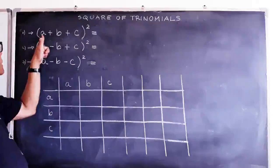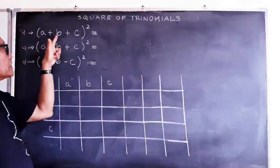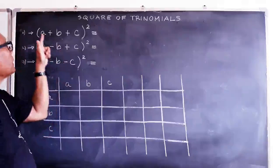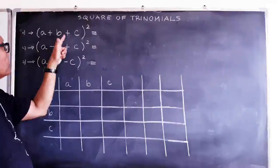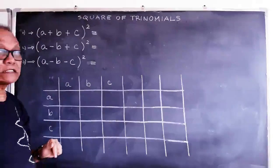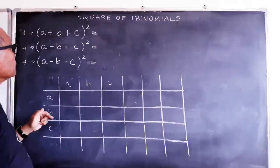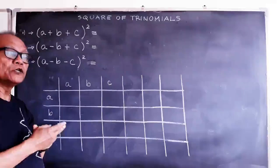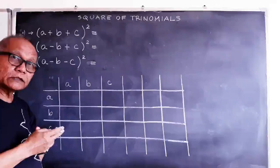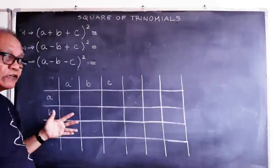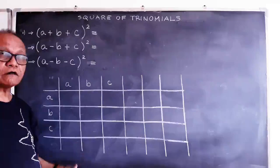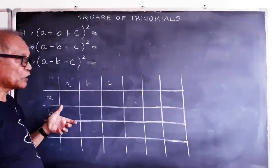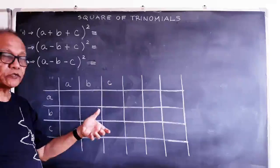This one is A plus B plus C times A plus B plus C. So before we proceed to the shortcut, we'll have first the conventional way of solving this one. I'm going to use the box method here first.